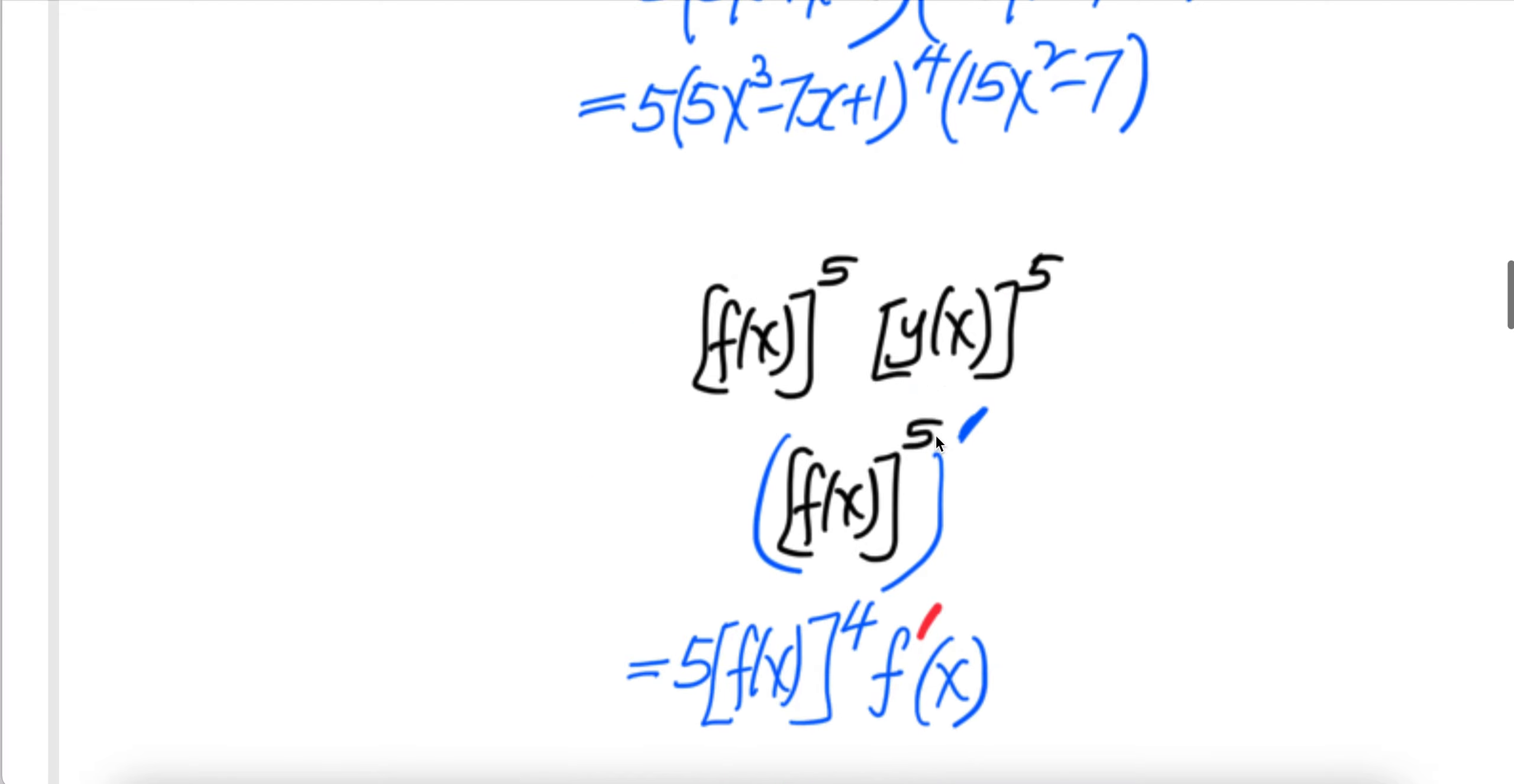The derivative of this is 5 comes down, f of x, 5 less 1 to 4 times the derivative of f of x is f prime of x.